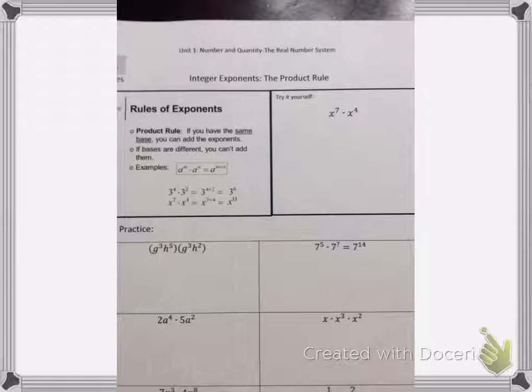Today we're going to talk about the product rule when we're talking about exponents. The product rule simply says this: if you have the same base, you can add the exponents.